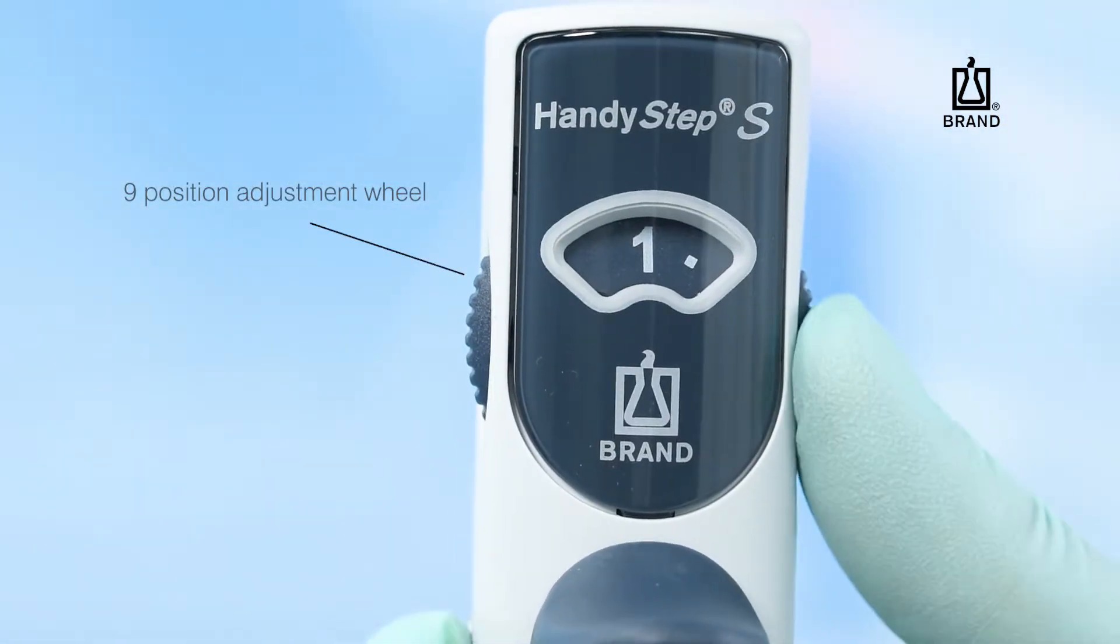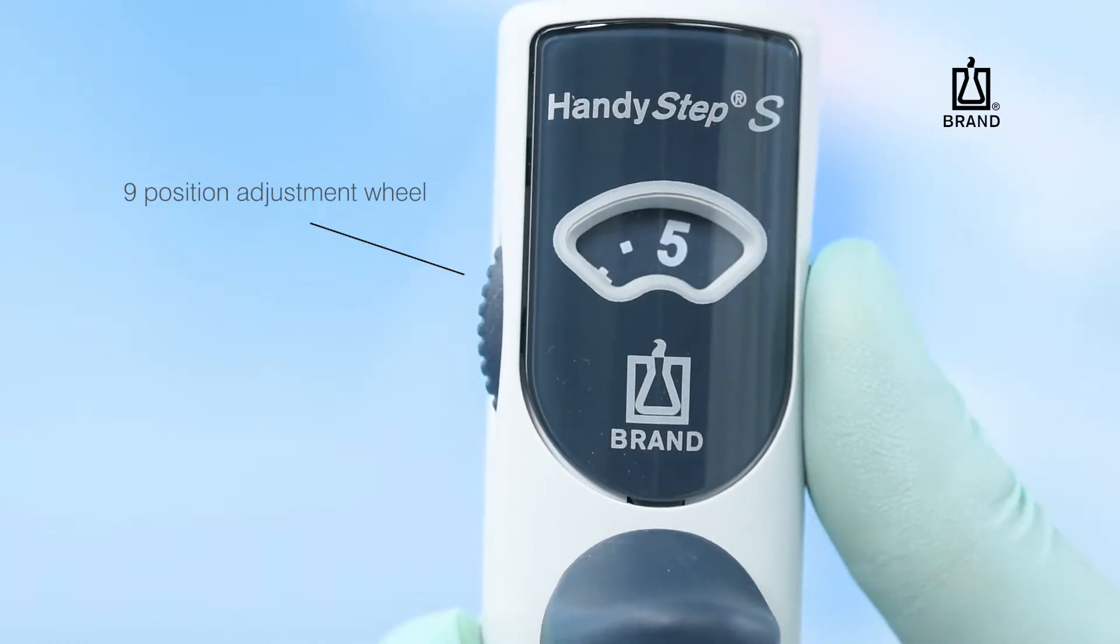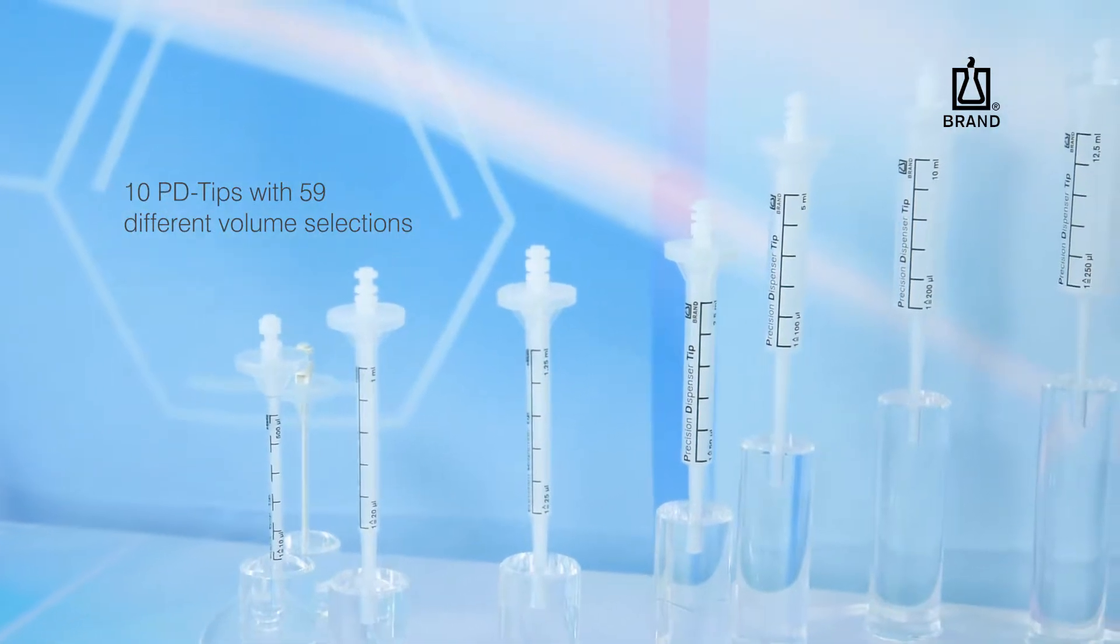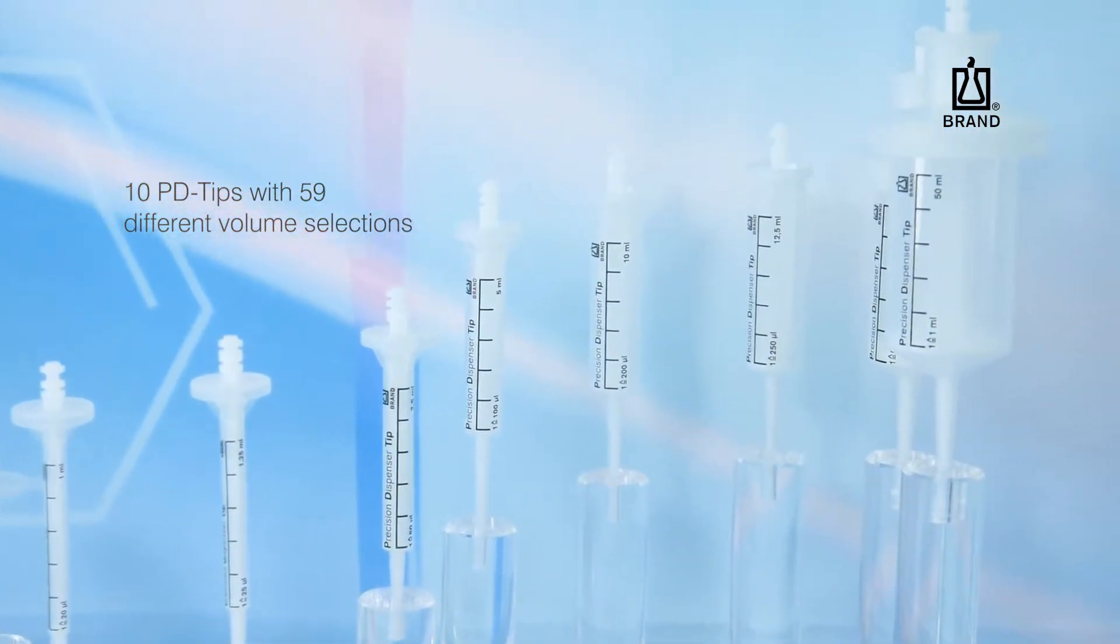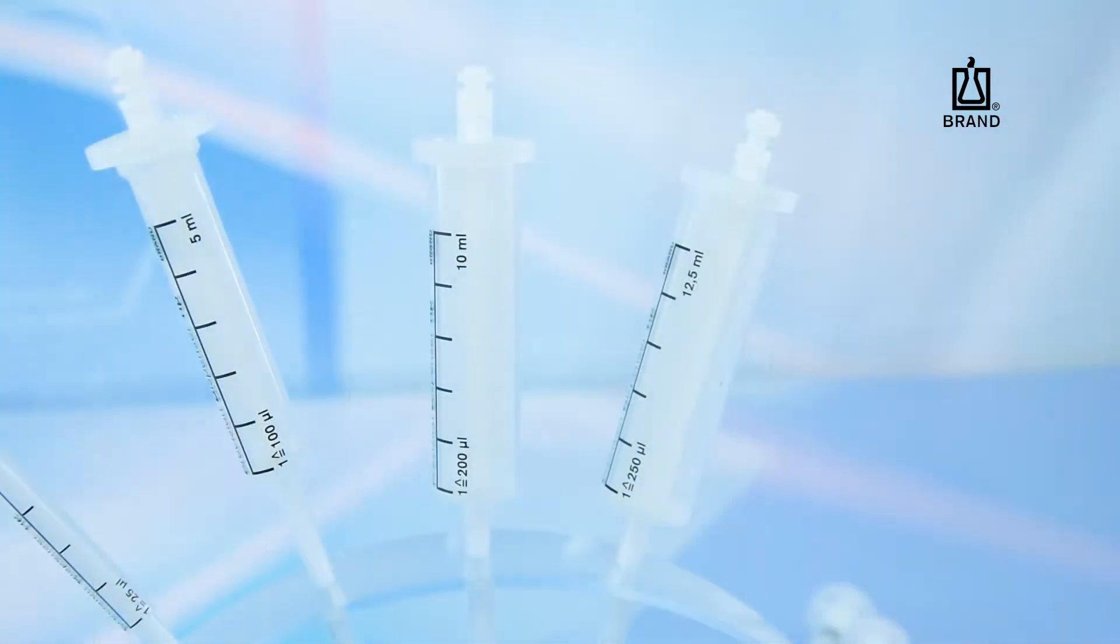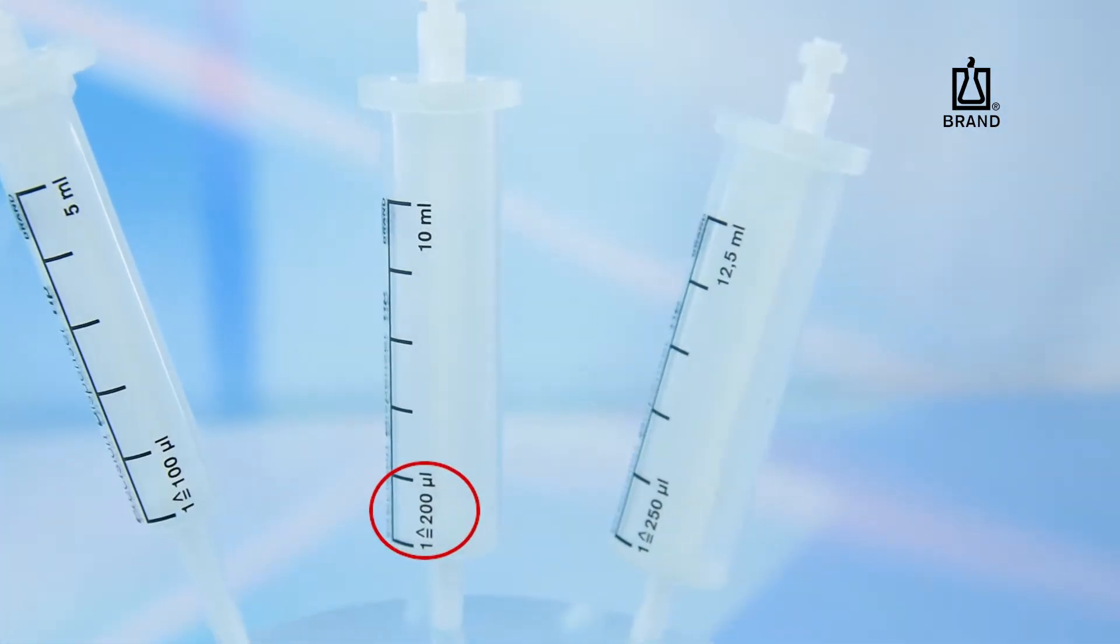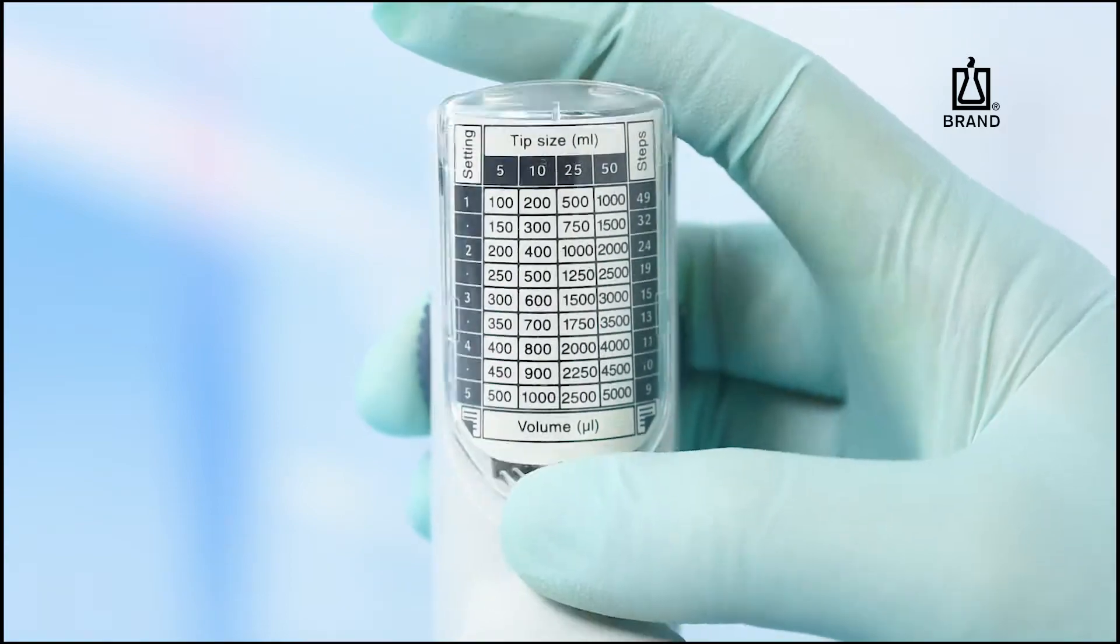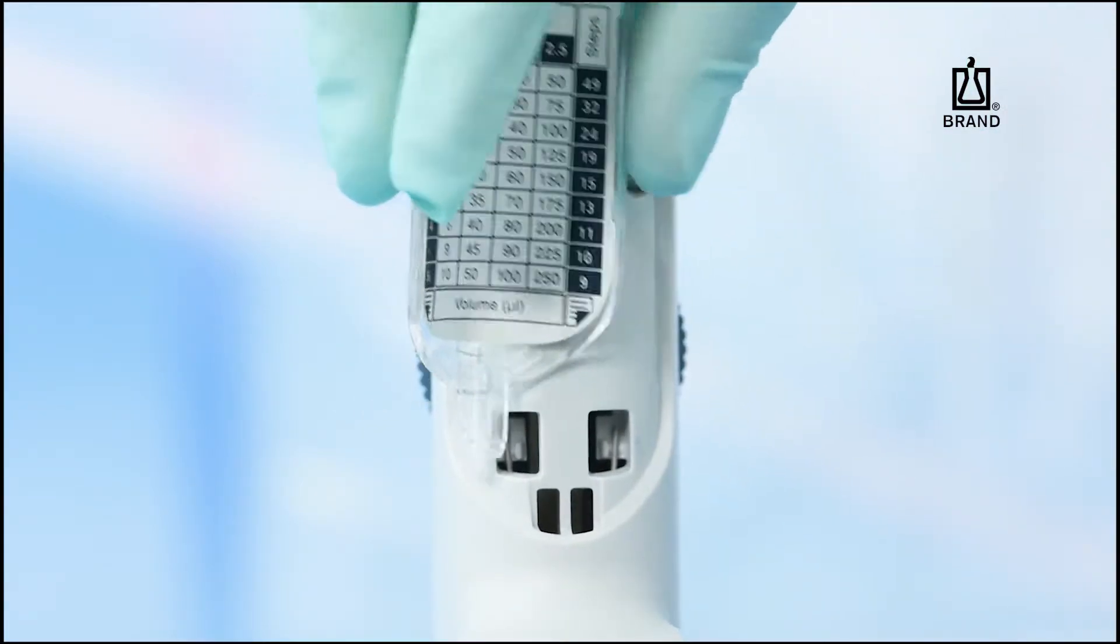The HandyStep S features a nine-position adjustment wheel with settings from one to five in half-step increments. When used with the 10 different sized PD Precision Dispenser tips, there are 59 different volumes that can be selected. To determine the volume dispensed, note the partial volume printed on the PD tip and multiply it by the settings shown on the adjustment wheel. Alternatively, a two-sided chart on the HandyStep S provides a convenient reference.